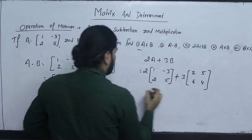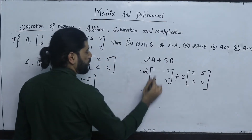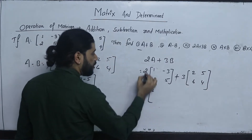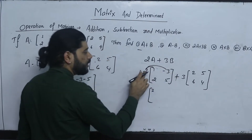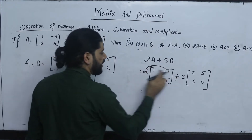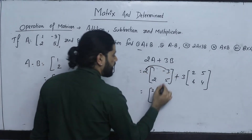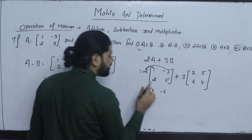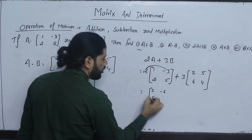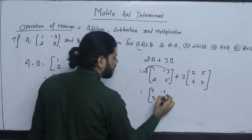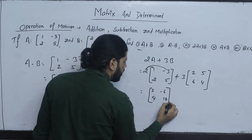Multiply 2 into 1 gives 2. Multiply 2 into 2, and multiply 2 into 1. 2 into 3 gives minus 6. 2 into 2 gives 4. 2 into 5 gives 10.